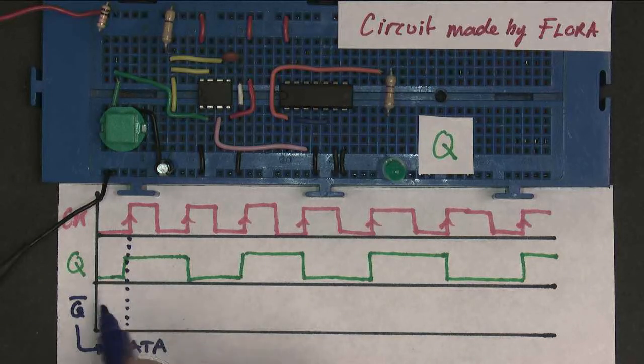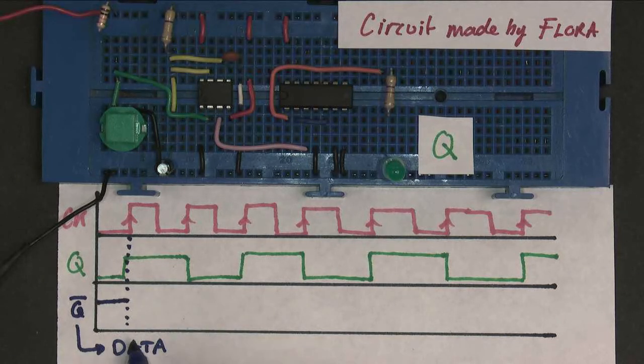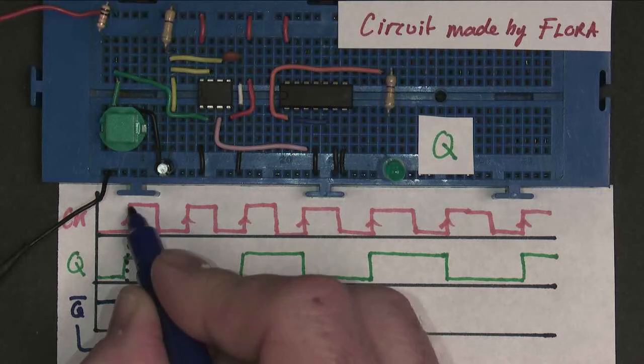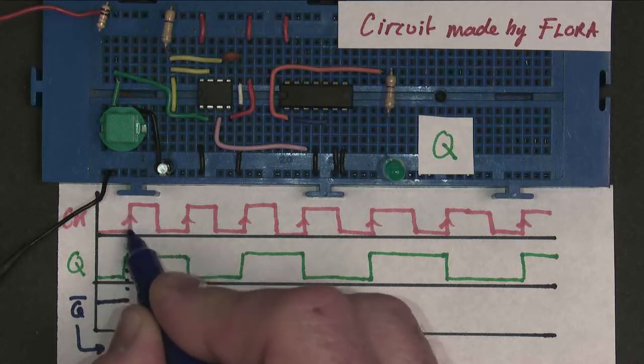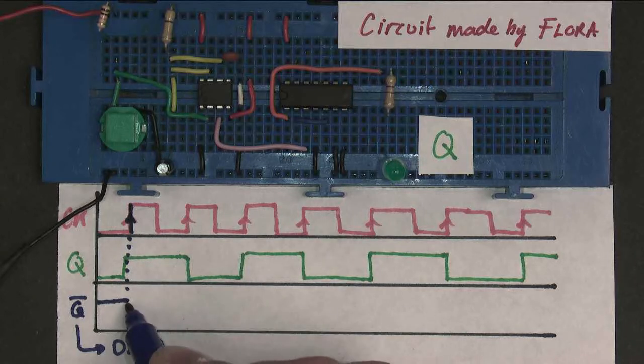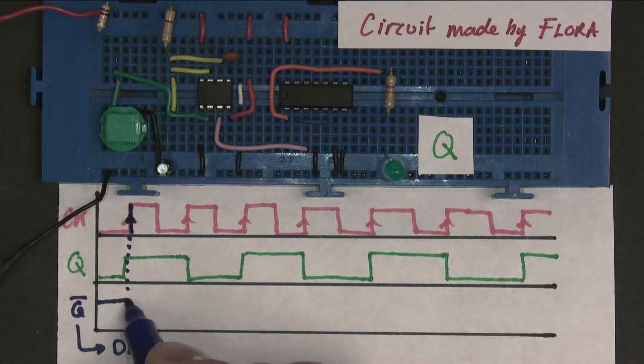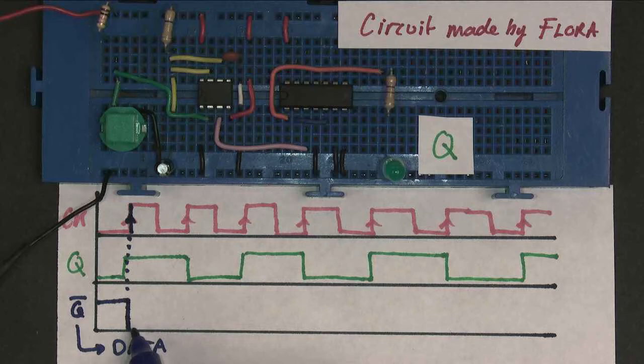So when Q was 0, Q-bar was 1, and therefore data was 1. So on the rising edge of the clock, like that, what happened is data was 1, so Q became 1, and then Q-bar and data became 0.